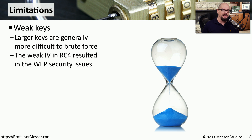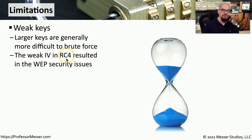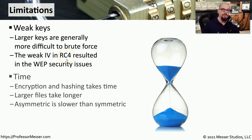We also have to think about the size of the keys used during the encryption process — generally, larger keys will make it much more difficult to brute force. A good example of where a weak key could be a significant problem was in WEP wireless encryption. The weak initialization variable used in RC4 resulted in cryptographic vulnerabilities that made it very easy for someone to gain access to wireless data. You also have to consider how long someone's willing to wait for the encryption or decryption process.